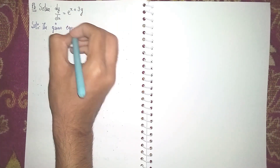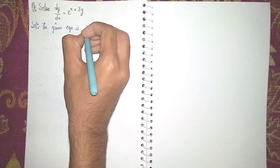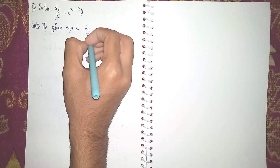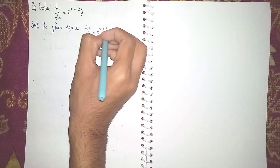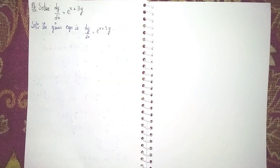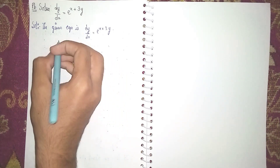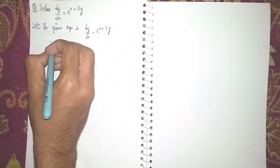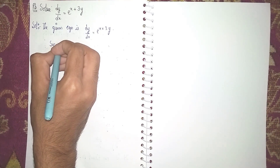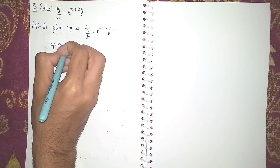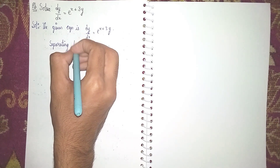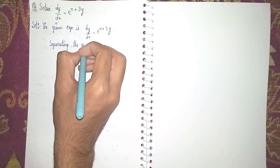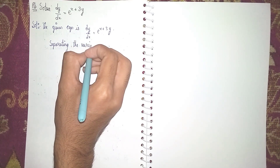The given equation is dy/dx = e^(x + 3y). Now we are using the method of separating the variables.